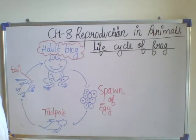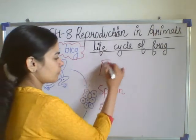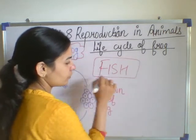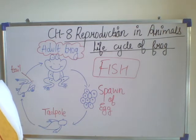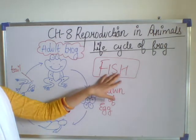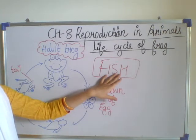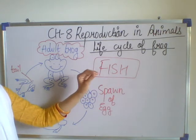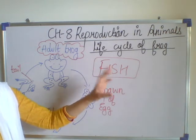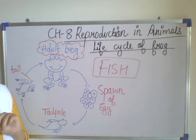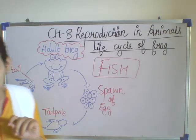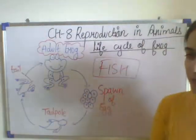Next comes fish. A fish lays thousands of eggs at a time in water. Baby fish hatch out of the eggs — hatch out means the baby comes outside the egg when the egg is broken. But only a few hundred baby fish grow into adult fish.